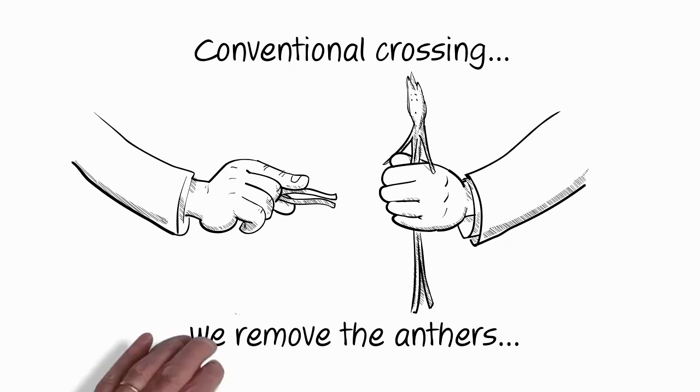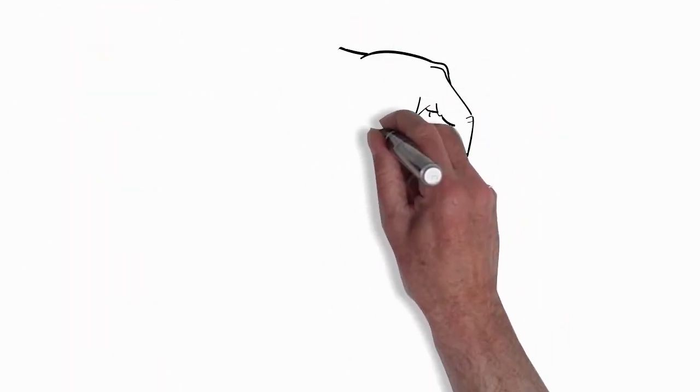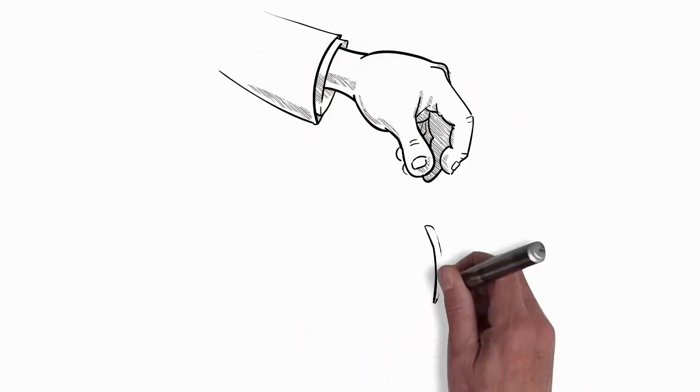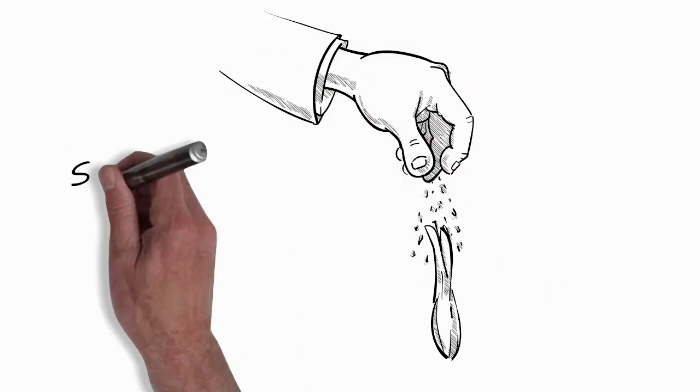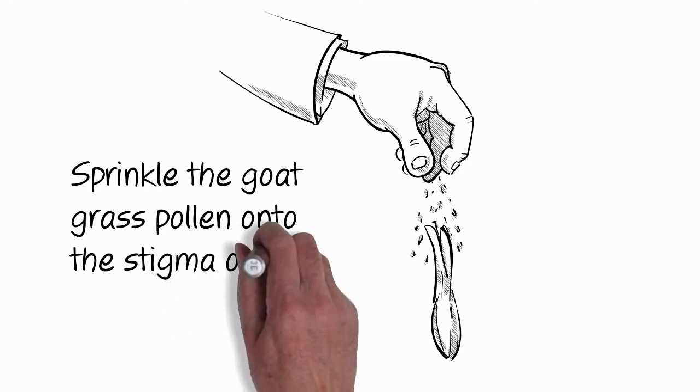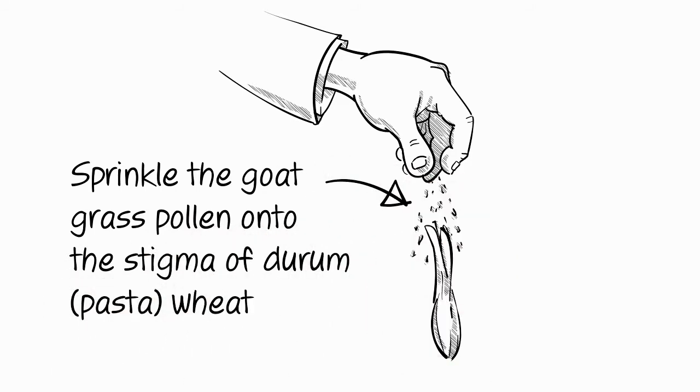Once we remove the anthers, we get the donor plant and we sprinkle the pollen from the donor plant onto the stigma, which is the female organ of the plant. And that's known as conventional crossing.